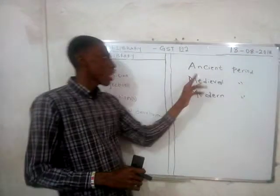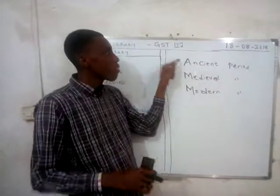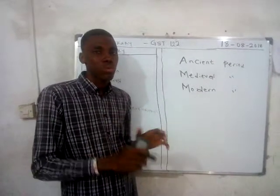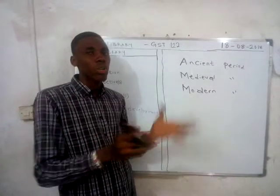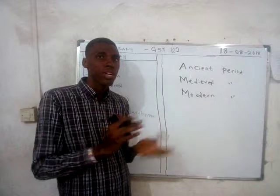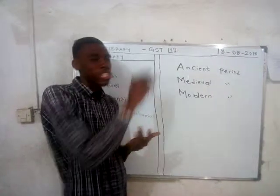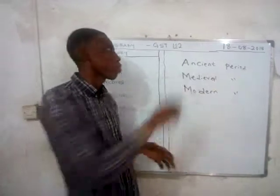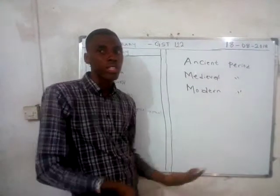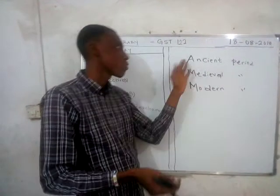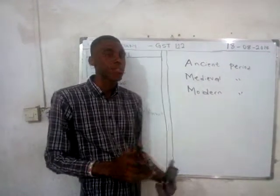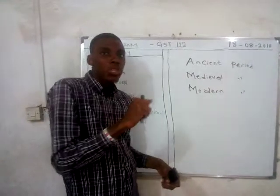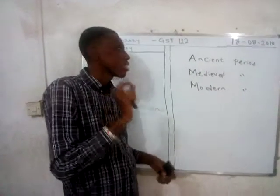In Africa, the system of writing first recognized is called hieroglyphics, practiced by the Egyptians. While in Europe and other parts of the world, it is attributed to Greece, giving us the Greek writing system. So, the library is as old as writing itself.